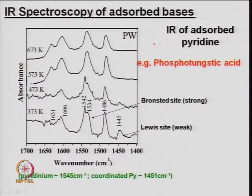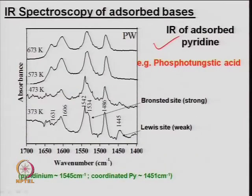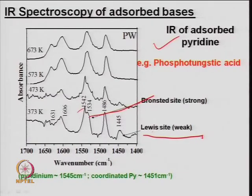Some pyridine is adsorbed and for different phosphotungstic acid, different wave number adsorptions are observed. Brønsted acid sites at 1540 and Lewis acid sites at 1450 — at these two wave numbers one can find out the concentration of acid sites. As a function of temperature also, one can see absorbance and identify the acid type.